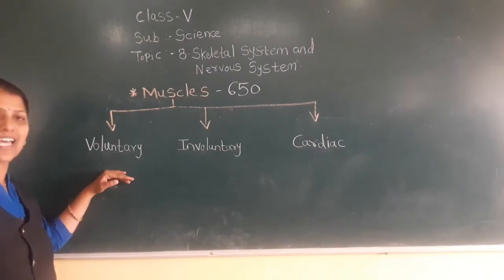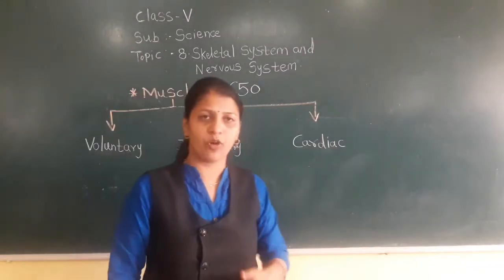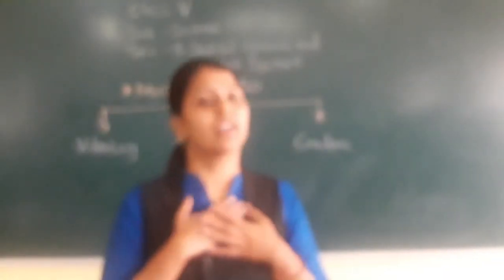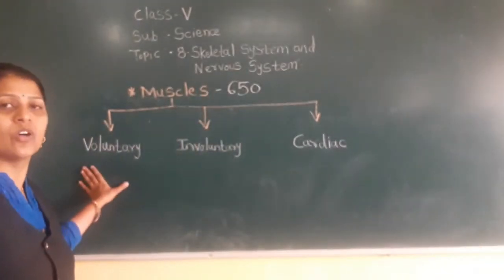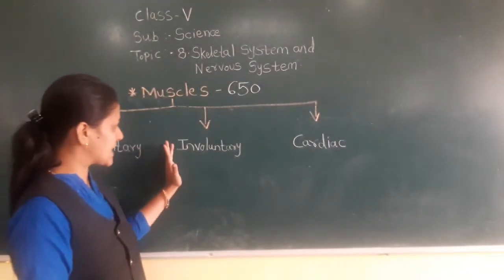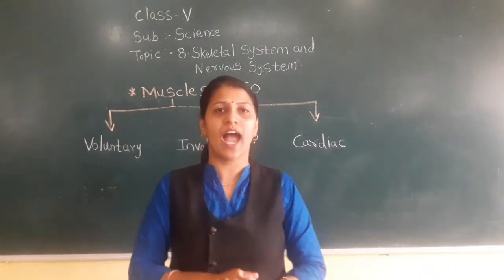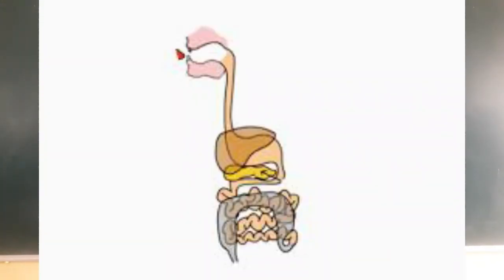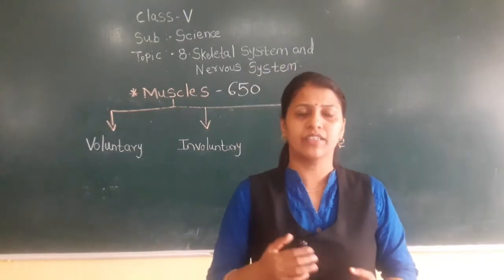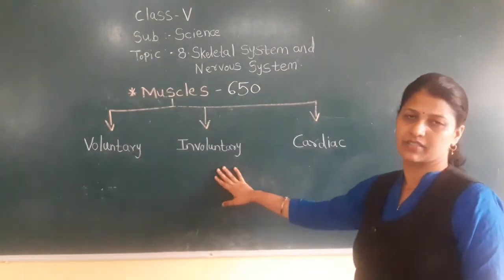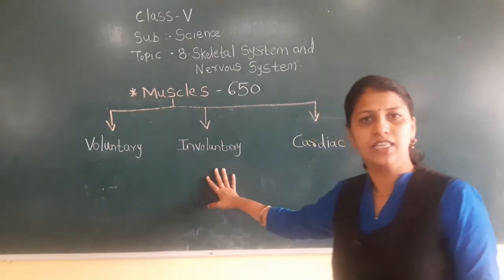Voluntary muscles are under our control — if I want to walk, I can walk with my leg. Next are involuntary muscles. For example, whenever you are having your food, it gets digested and the process inside the stomach continuously works. These muscles are not under our control, so such muscles are called involuntary muscles.